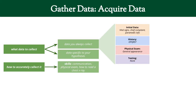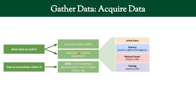The initial data will be the vital signs, chief complaint, and maybe things that the paramedics say. On your history, you're going to get certain things like the OPQRST, which you'll learn about in your history-taking class. On your physical exam, you are probably going to always at least look at the patient and see how they appear — do they look sick, in distress, or comfortable? For testing, there's nothing that is always going to be done.